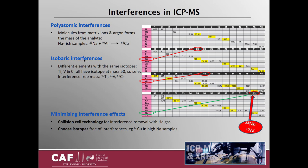Another type is isobaric interferences, where two elements have isotopes at the same mass. So titanium, vanadium, and chromium all have isotopes at mass 50, but they each have another mass without any interferences: titanium at mass 49, vanadium at mass 51, and chromium at mass 52. To minimize interferences, we can use collision cell technology to remove them with helium gas, or we just choose isotopes free from interferences — for example, using copper-65 rather than copper-63 in high sodium samples.